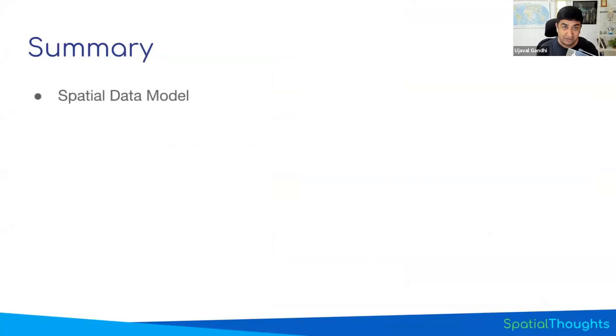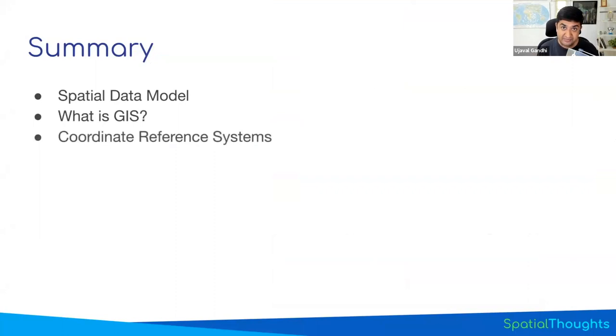To summarize: for global maps, use Equal Earth. For country or continent maps, use Albers Equal Area or Lambert Conformal Conic, or use country-specific grids if available. For city maps, use the UTM projection. In this video, we covered the spatial data model, how to represent different types of geographic information and store them in different formats. We learned about GIS — what it is and what it can do. And finally, we learned about coordinate reference systems, including terms such as datums, ellipsoids, geoids, and projections, and what projection to use for global, regional, and local maps. Hope this video gives you a good understanding of GIS concepts and terminology. You are now ready to take your first steps into the world of GIS. Thank you.